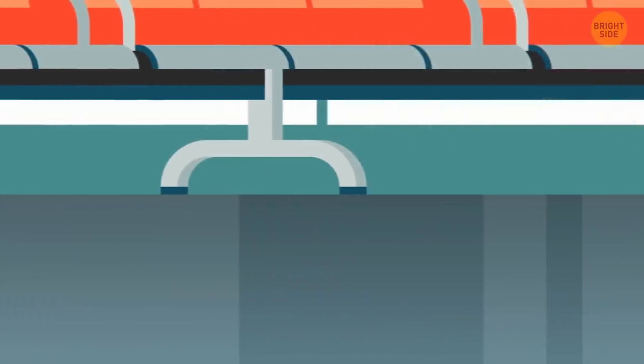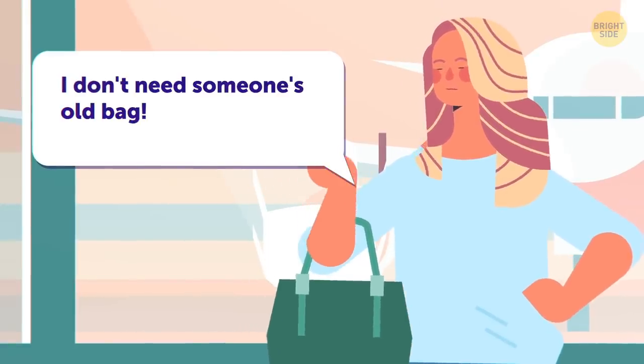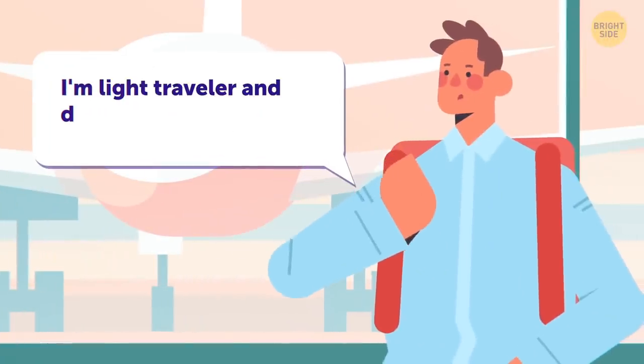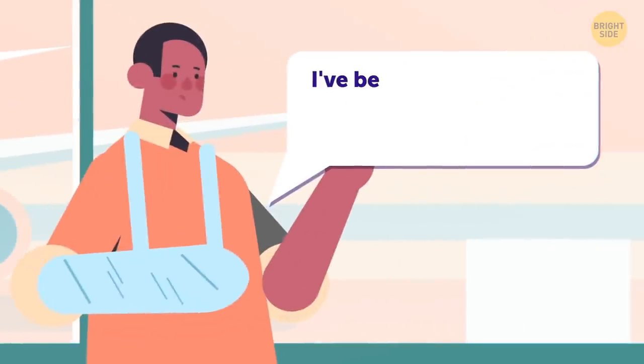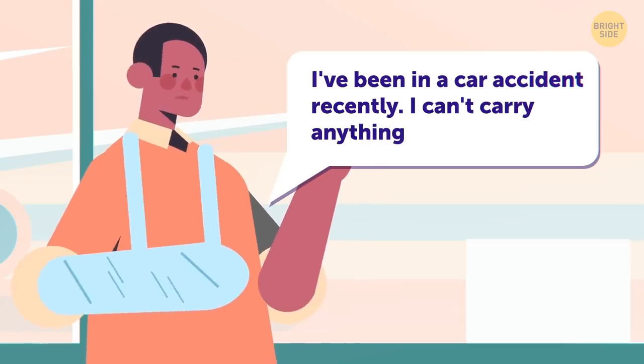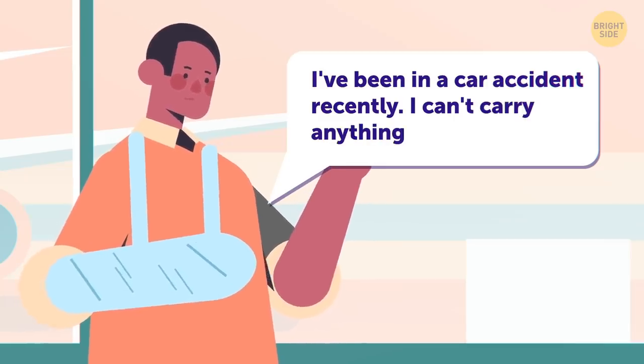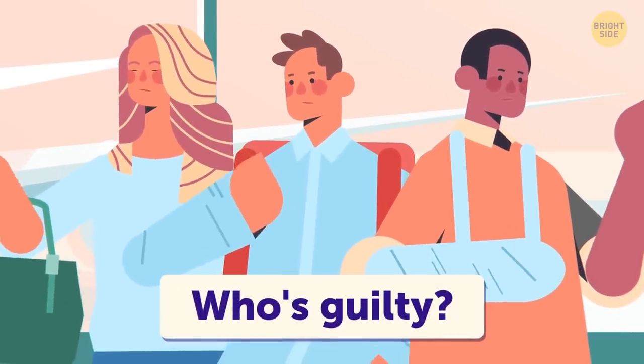A businessman's about to go through a security check at the airport when he realizes someone's taken his luggage. Airport security officers have three suspects. Anna says she doesn't need someone's old bag. She has her own, thank you very much. Mike answers he's a light traveler and doesn't have luggage. He keeps everything in his backpack. James says he's been in a car accident recently. His arm's broken, and he has a sprained ankle. He can hardly carry anything. In no time, the security officers arrest the thief. Can you figure out who it is?